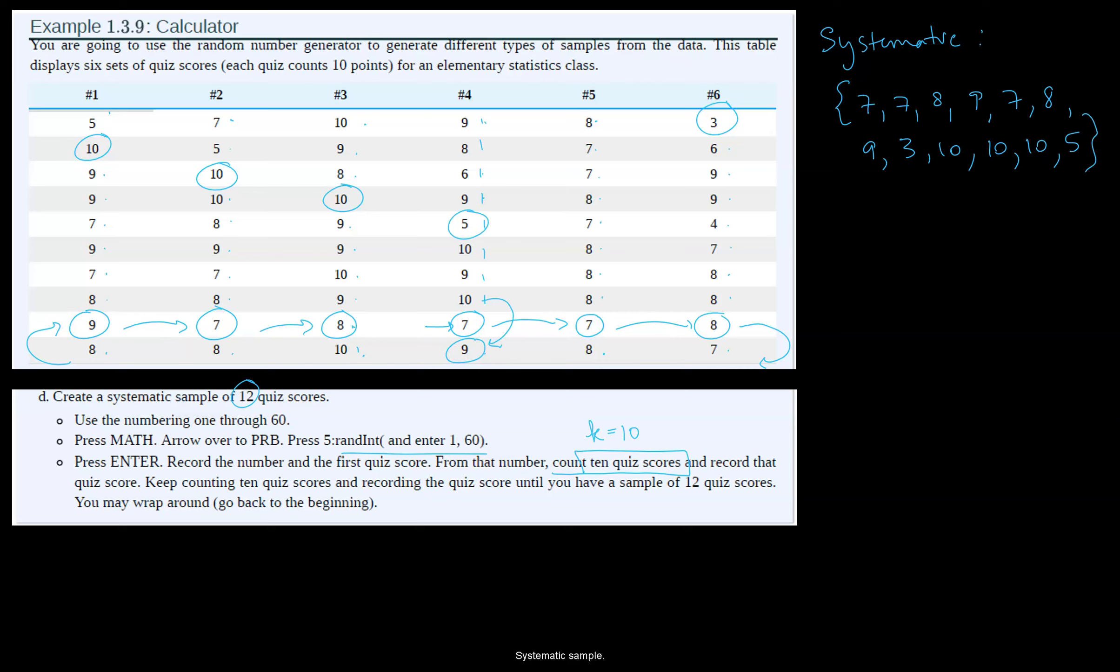And that concludes our systematic sample. We could have chosen k to be a different number instead of 10. It could have been 12, it could have been 4, it could have been 15. We could have selected it randomly, but here we're given count every 10th one and we're able to grab that sample.